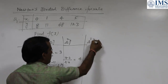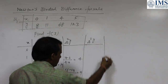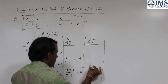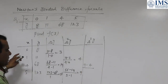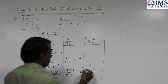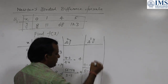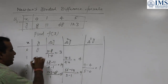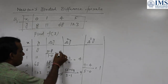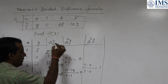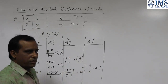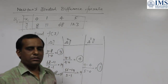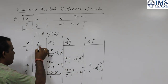The third divided difference: (9 minus 4) divided by (5 minus 0) equals 5 divided by 5, which is 1. So according to the formula: the first divided difference of f(a) is 3, the second divided difference of f(a) is 4, the third divided difference of f(a) is 1, and f(a) equals 8.